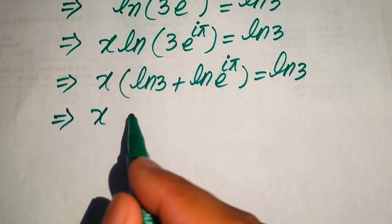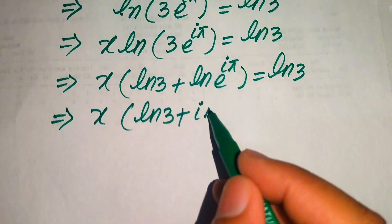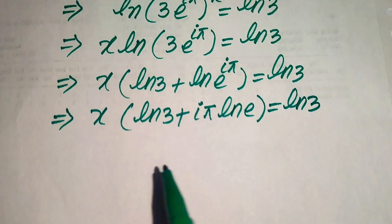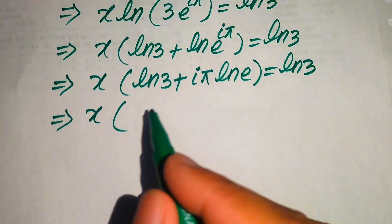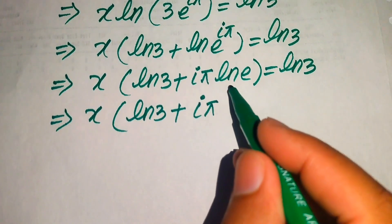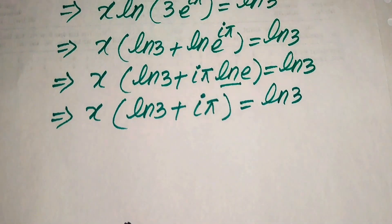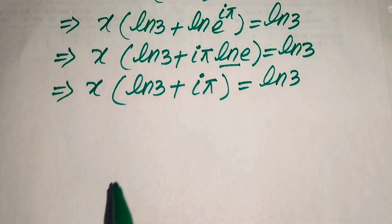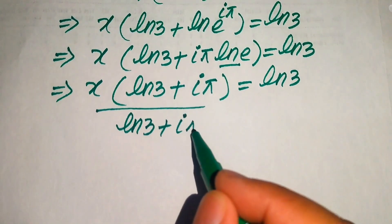We apply the power property again inside the log, moving iπ to the front: x times (ln 3 + iπ · ln e) equals ln 3. Since ln e equals 1, this simplifies to x times (ln 3 + iπ) equals ln 3. To solve for x, we divide both sides by (ln 3 + iπ).